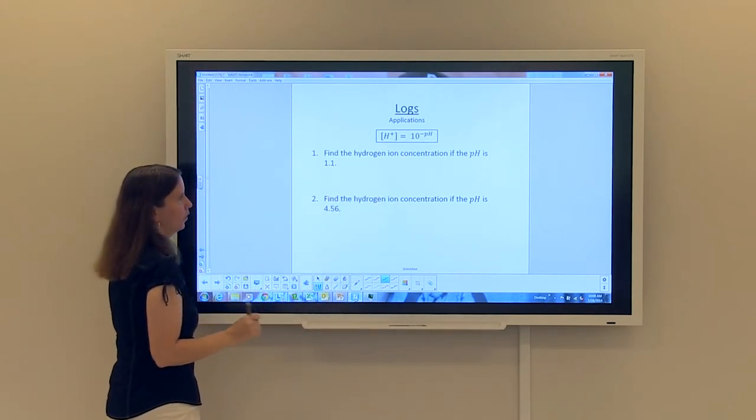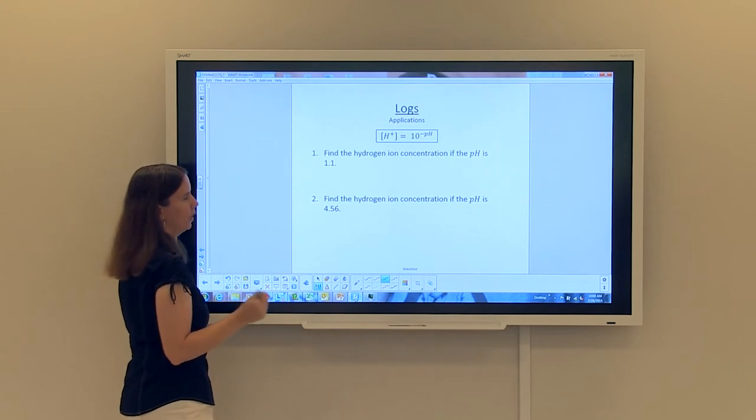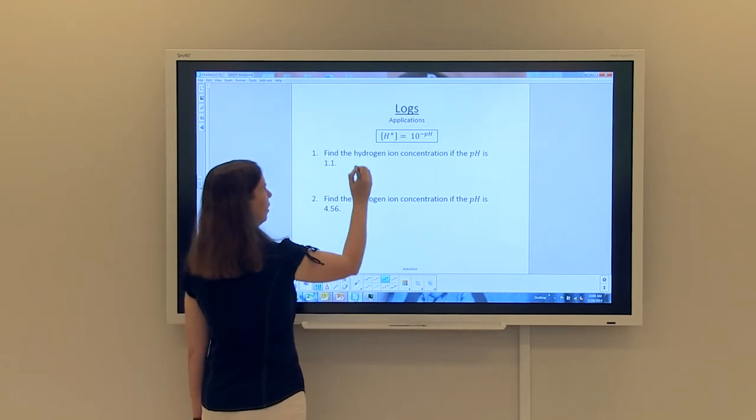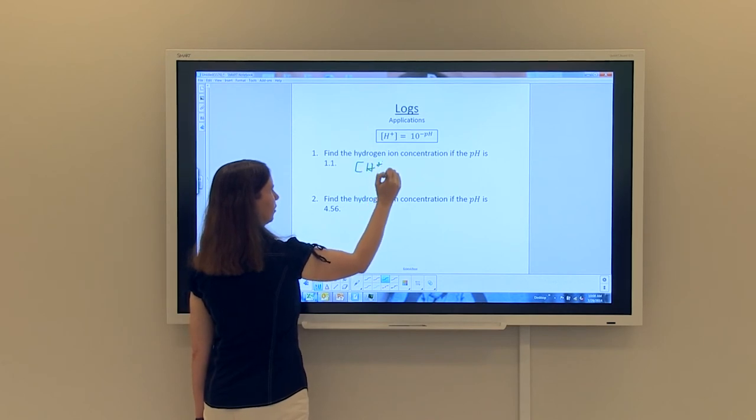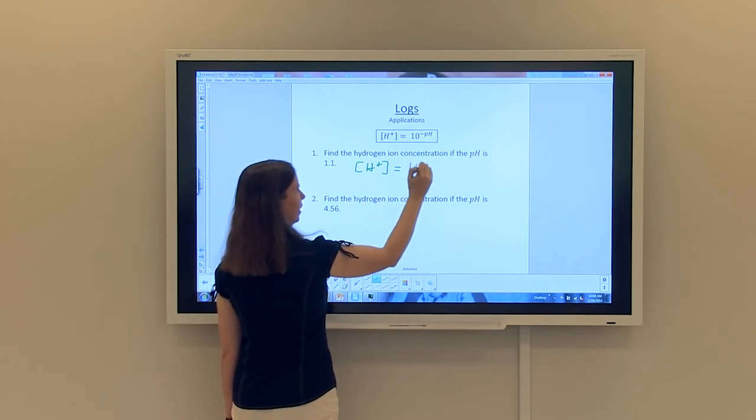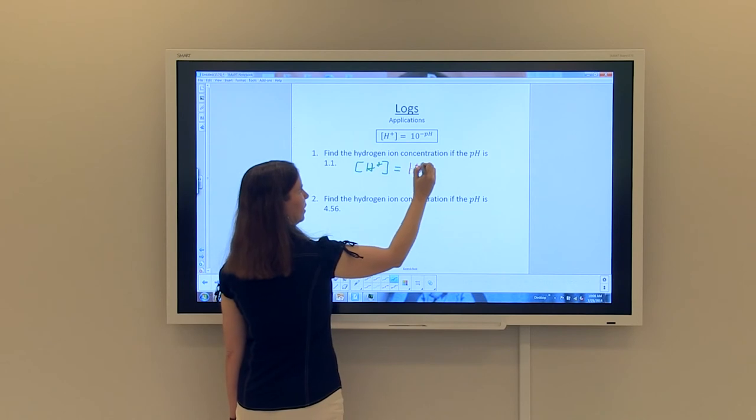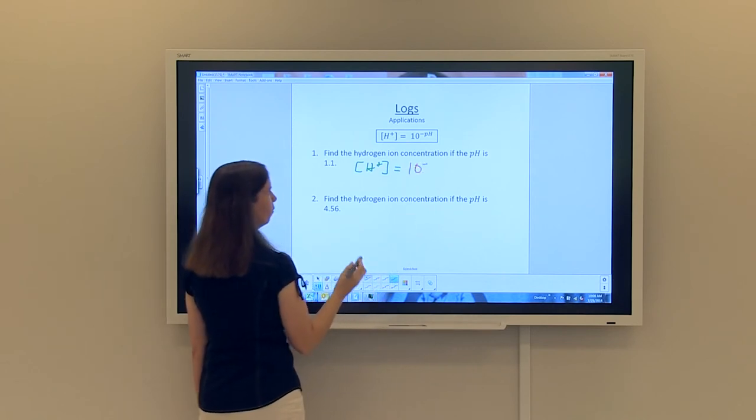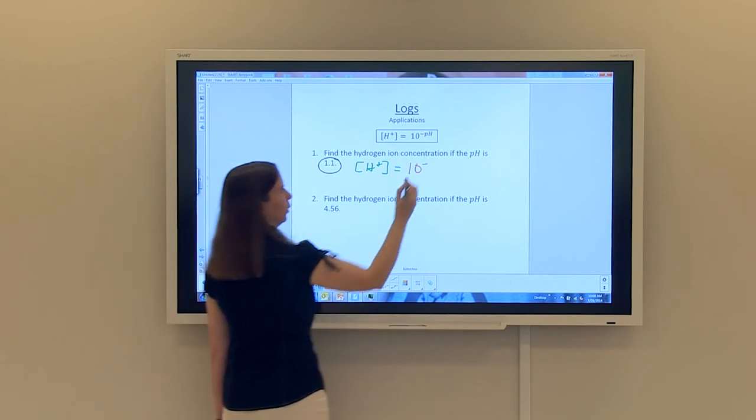So looking at the first example, find the hydrogen ion concentration if the pH is 1.1. So we're looking for the hydrogen ion concentration. Again, we're simply going to substitute in. So I'm going to bring down the 10 in the formula. And I'm going to raise it to negative of my pH. And I was given that my pH was 1.1.